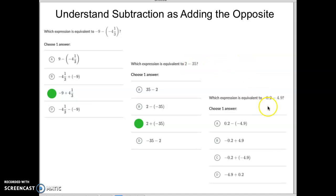All right, next one. Which expression is equivalent to negative 0.2 minus 4.9? Well, again, let's change this from minus to plus negative 4.9. Because the opposite of positive 4.9 is negative 4.9.